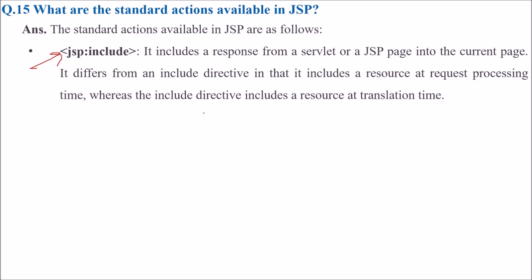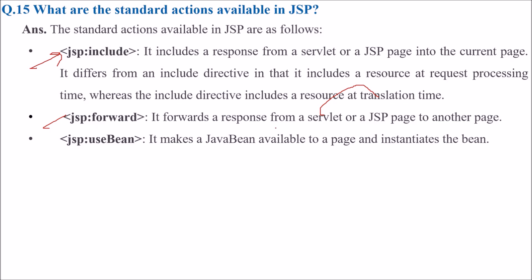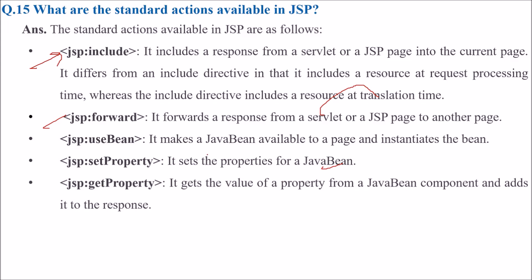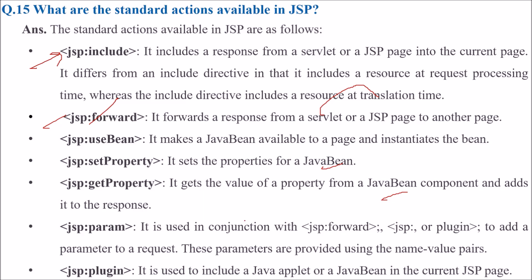More standard actions available in JSP: JSP forward — forwards a response from a servlet or JSP page to another page. JSP use bean — makes a Java bean available to a page and instantiates the bean. JSP set property — sets the property for a Java bean. JSP get property — gets the value of a property from a Java bean component and adds it to the response. JSP param — used with forward or plugin to add a parameter to a request using name variables. JSP plugin — used to include a Java applet or Java bean in the current JSP page.